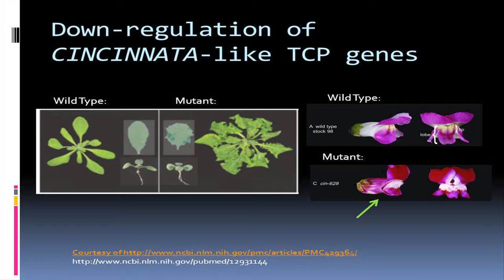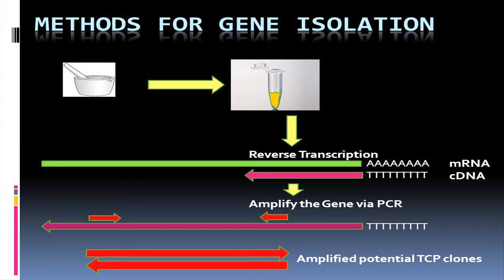The methods for our gene isolation: first, we took our samples, froze them with liquid nitrogen, and ground them with a mortar and pestle. We then put those samples into centrifuge tubes and spun them down to separate the RNA. The RNA is then reverse transcribed — whereas transcription is DNA to RNA, we take our RNA and transcribe it back into DNA so it's easier to work with. That DNA is put into a PCR, which stands for polymerase chain reaction, which essentially magnifies the gene we're trying to isolate many times so we can work with it.